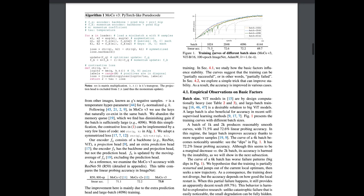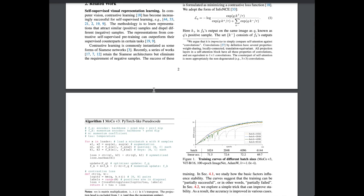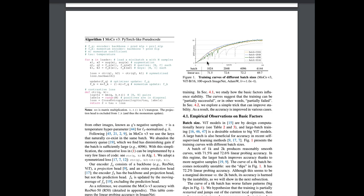They reduce the MoCo framework by removing the memory queue, so without it MoCo is really just Bootstrap Your Own Latent with a momentum running average of the encoder. Similar to SimCLR, they crank up the batch size to 4,096 — using large batches tends to improve contrastive learning because you have more negative terms to regularize the loss. The big thing they investigate is how well the vision transformer replaces the ResNet in this Siamese contrastive framework. They find training instability where performance suddenly drops across epochs.